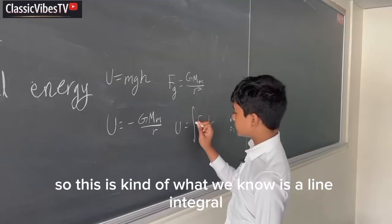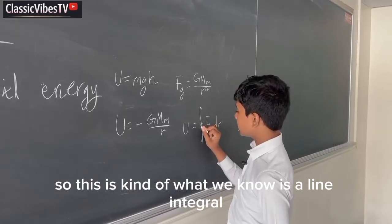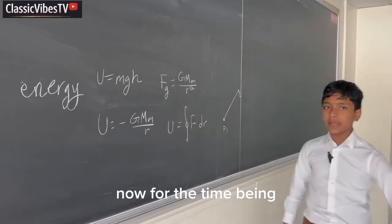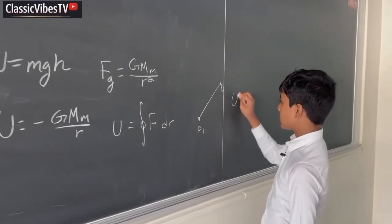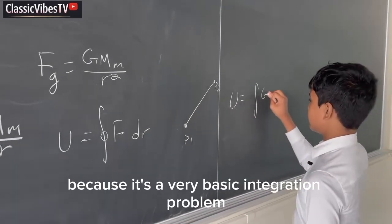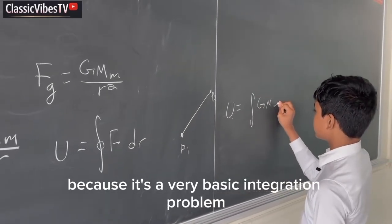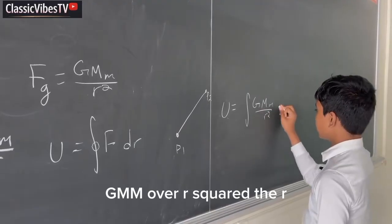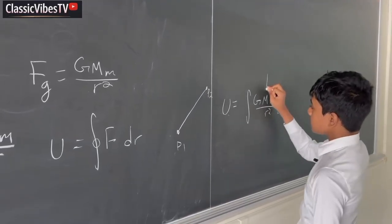So this is kind of what we know as a line integral. Now, for the time being, we can just set this because it's a very basic integration problem, GMm over r squared dr.